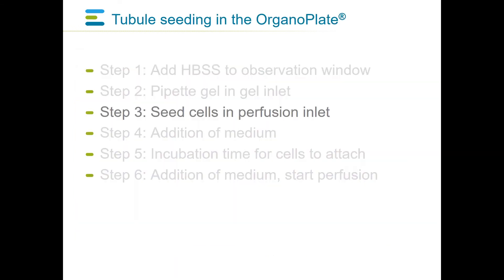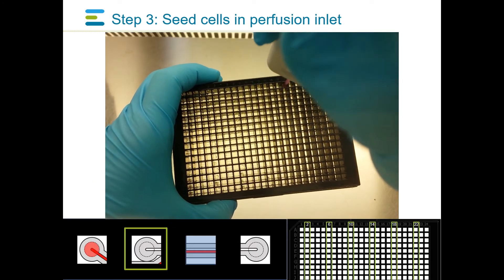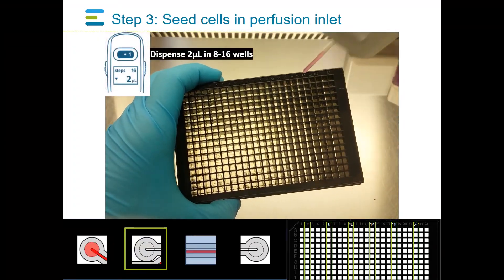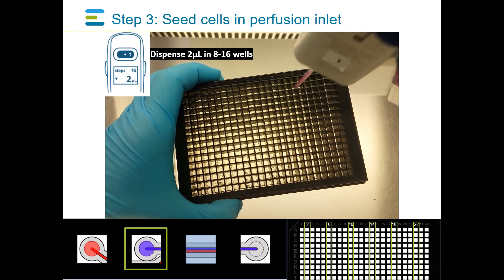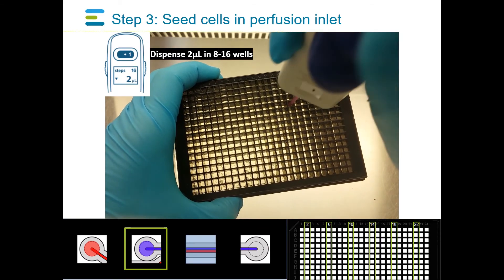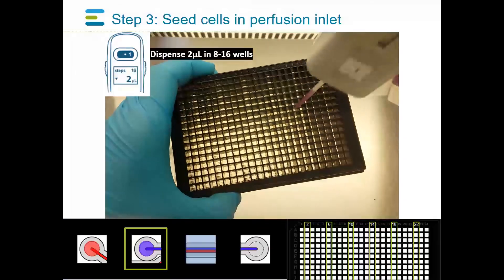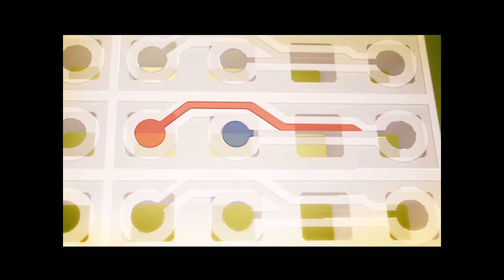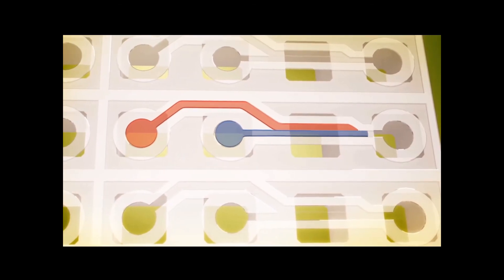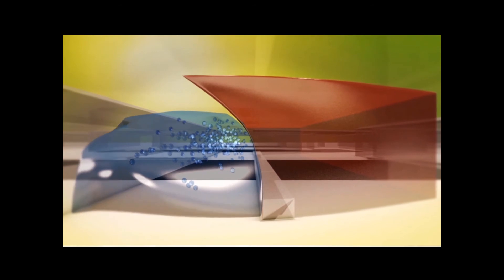In the third step, cells are seeded in the perfusion inlet using a technique similar to gel seeding. Please note that harvesting and preparing a dilution of the cells should be performed before this step and is not covered in this video. Dispense two microliters of cell suspension into the medium inlet of columns 2, 6, 10, 14, 18, and 22. The medium flows into the perfusion channel by capillary force, taking the cells into the device.